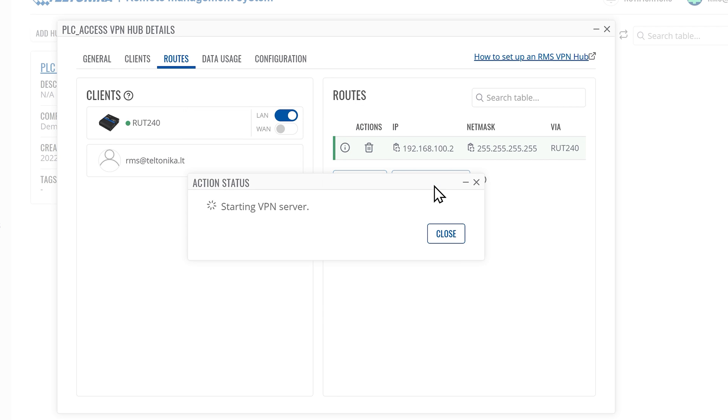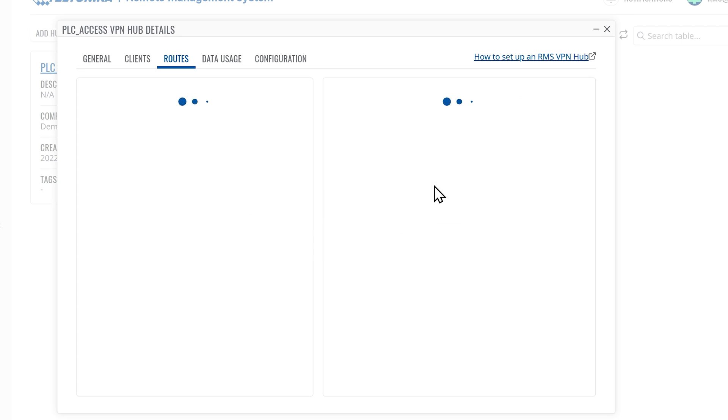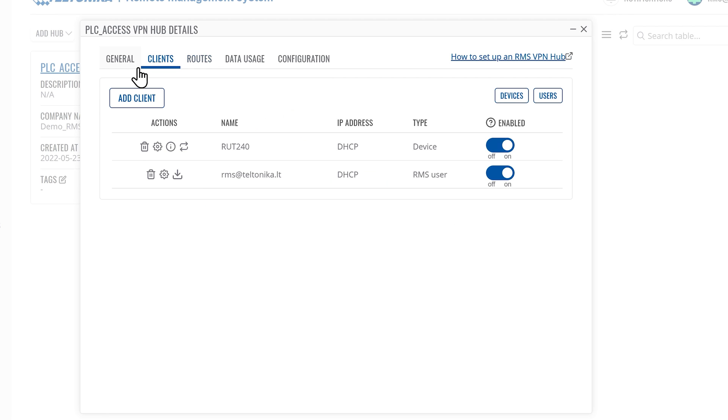Next, restart the hub to implement changes. Configuration is complete. VPN configuration file is in the Clients tab.